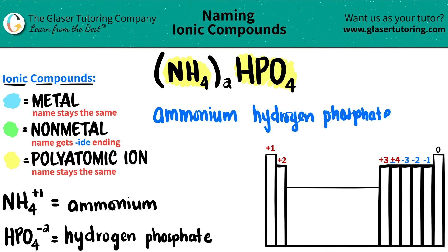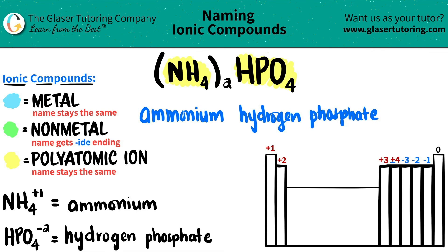And in this case, we don't need a Roman numeral because we don't have any metals. The Roman numeral is always the charge of the metal. But we don't have any metals here. We just got two polyatomics. So we're done. So (NH4)3HPO4 is ammonium hydrogen phosphate.